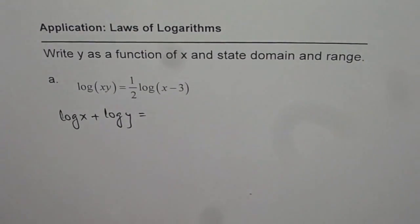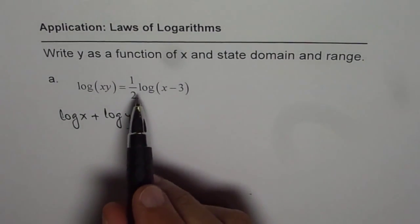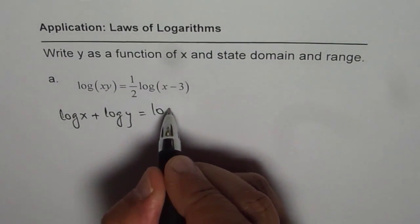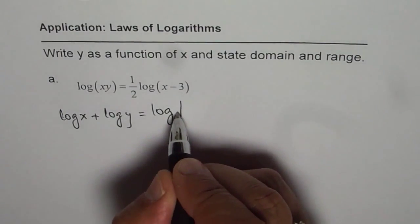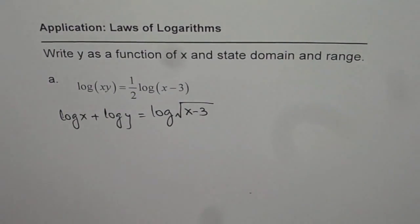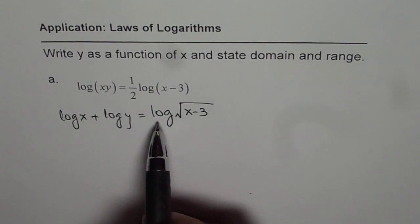On the right side, we get half of log x minus 3. So we could write this as log of square root of x minus 3. So that is how we can write the right side using the power rule.